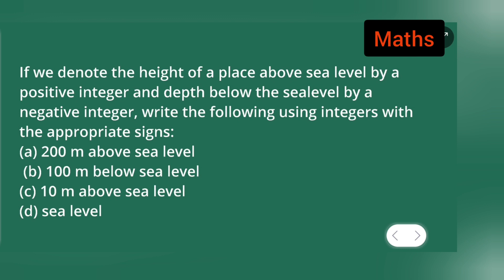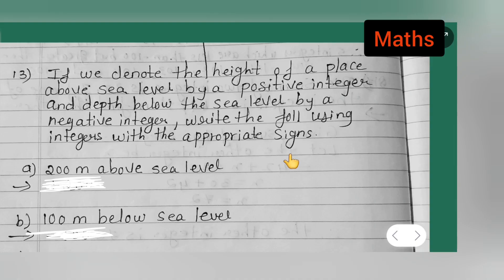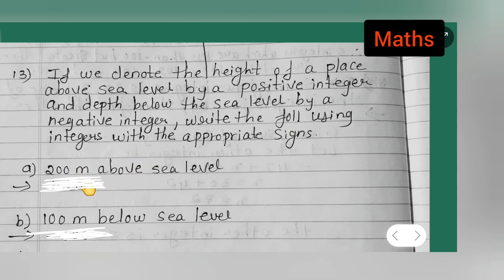Let's look at the answers. I'll take down the question first: if we denote the height of a place above sea level by a positive integer and depth below sea level by a negative integer, write the following using integers with appropriate signs. First: 200 meters above sea level.